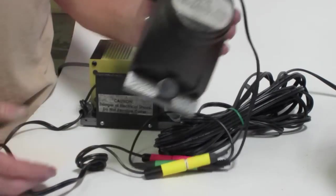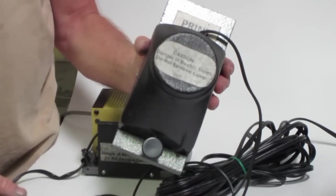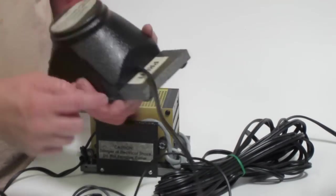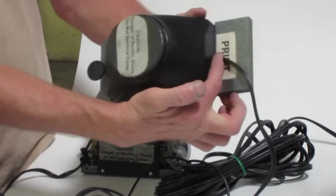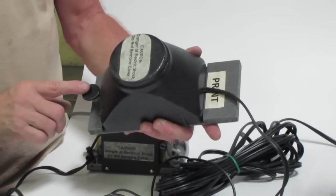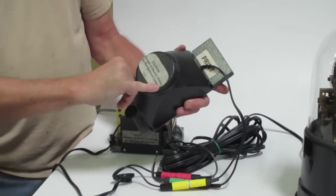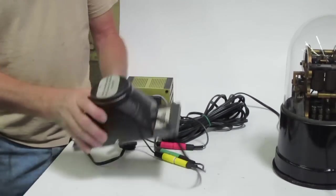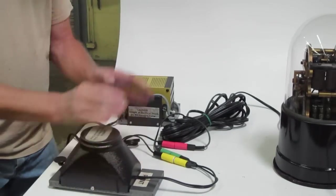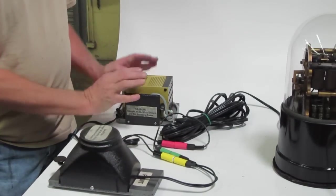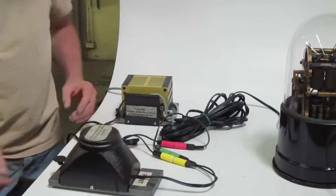Same thing for this piece, which sends the pulse to the machine. It says print right there so they know that this is the signal that makes it print. Danger of electric shock, do not remove cover. There's no way to get a shock from either of these things unless you remove the cover.